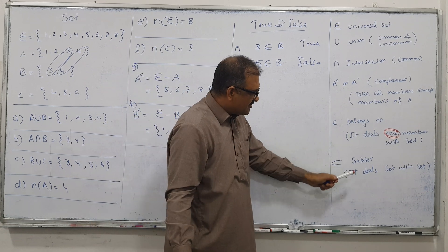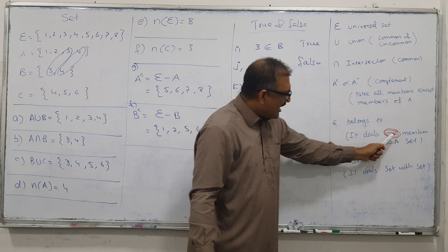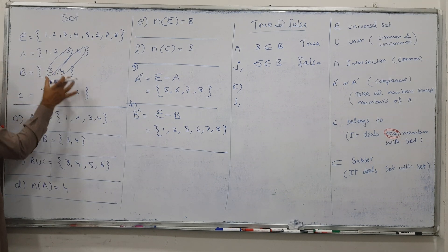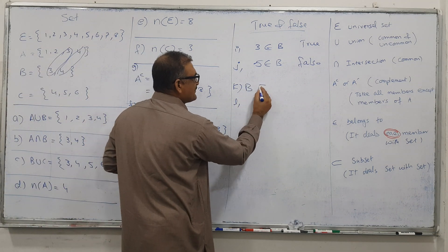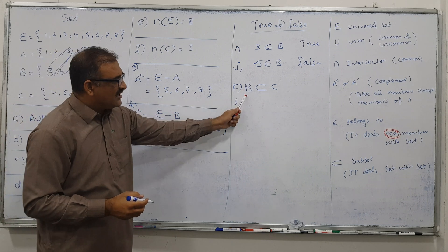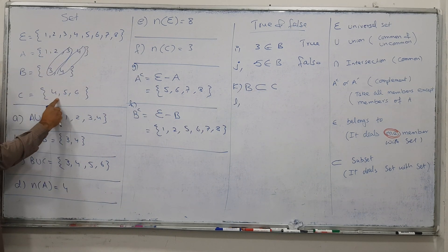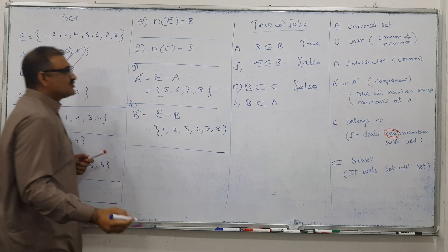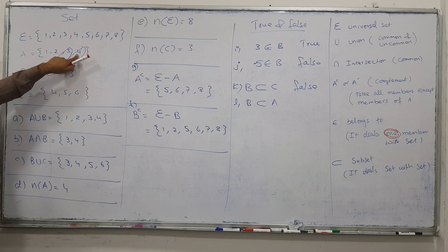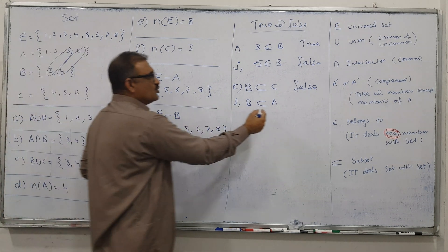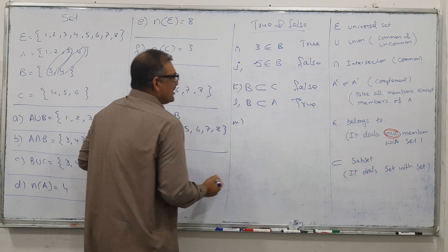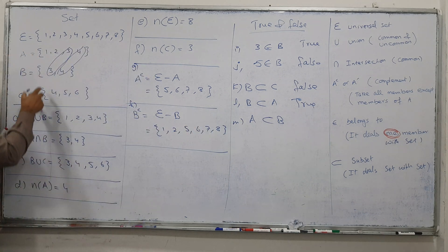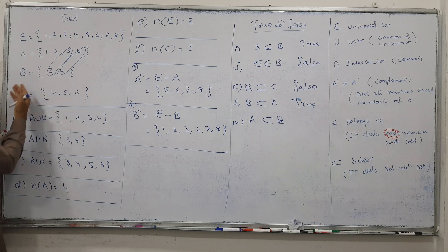Let's talk about the subset concept. Subset deals set with set, while belongs-to deals element with set. For example, is B a subset of C? It means all members of B must be present in C. Is 3 present in C? No — so this is false. But can I say B is a subset of A? Is 3 present in A? Yes. Is 4 present in A? Yes — all members of B are present in A, so this is true. Can A be a subset of B? 1 and 2 are present in A but not in B — so false.